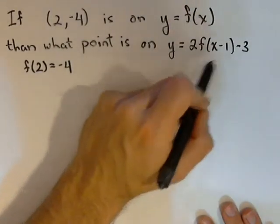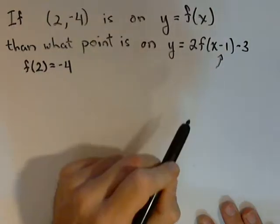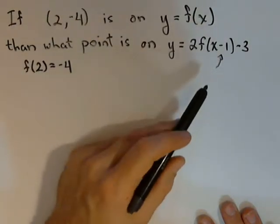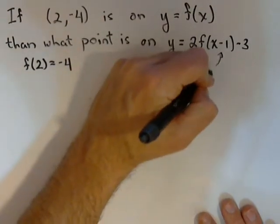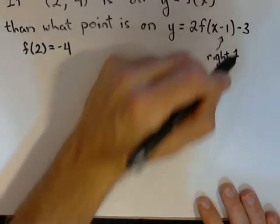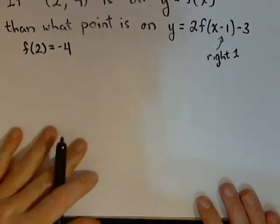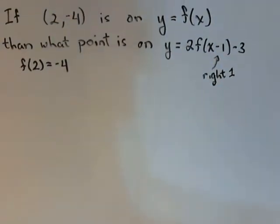So first off, let's look on the inside. We see right here that we have x minus 1, and when we subtract 1 on the input, what that's going to do is it's going to shift our graph right one unit. So we're going right by one unit. I have another video that explains why exactly that is. I'm not going to go too into that now.